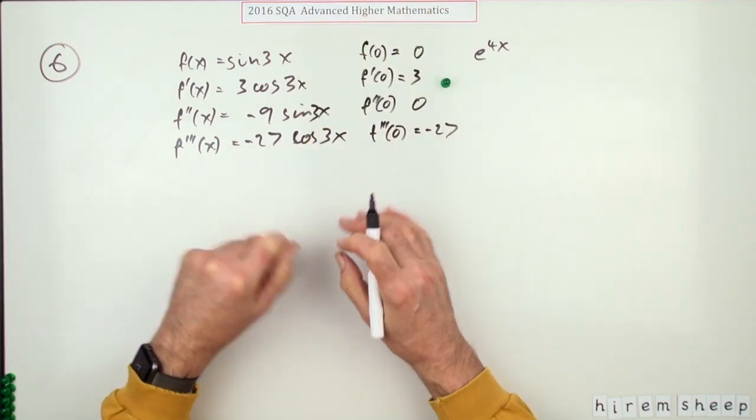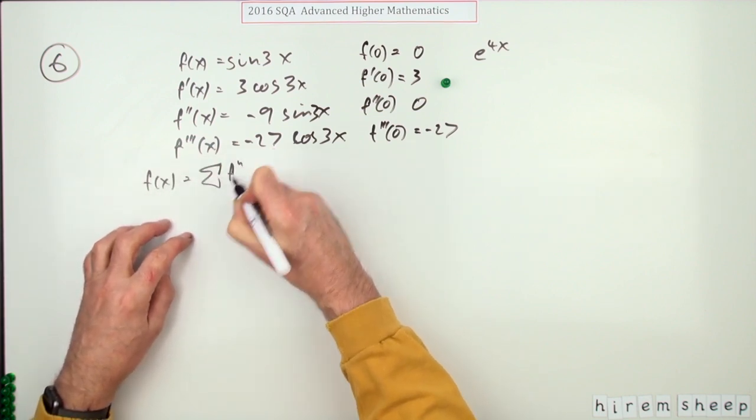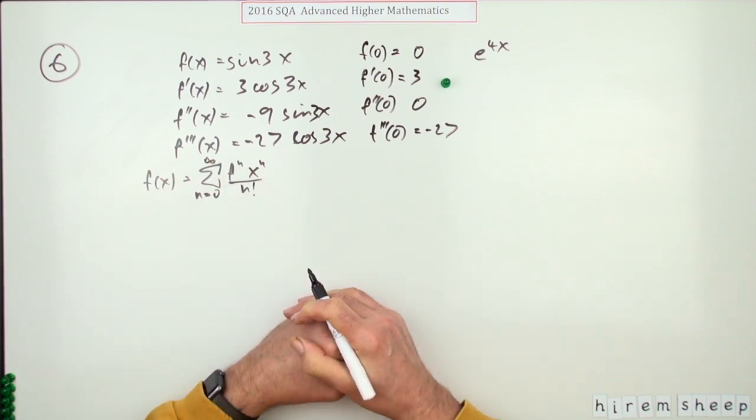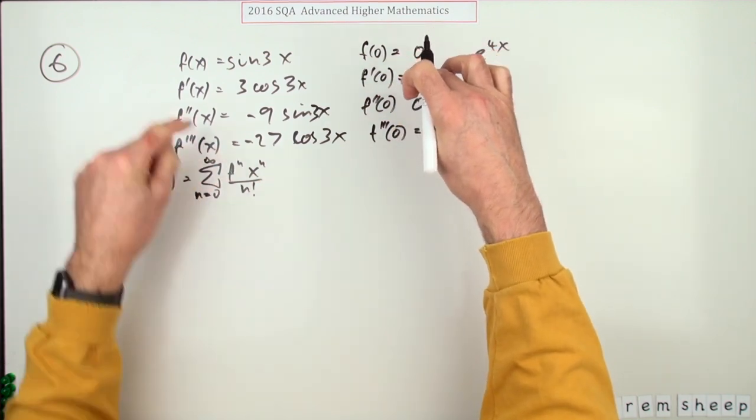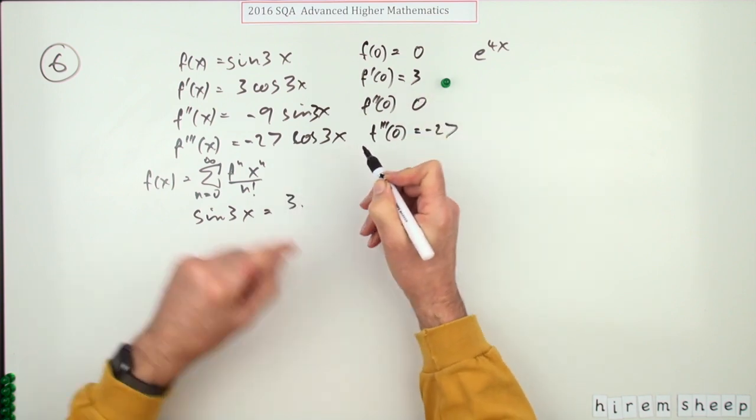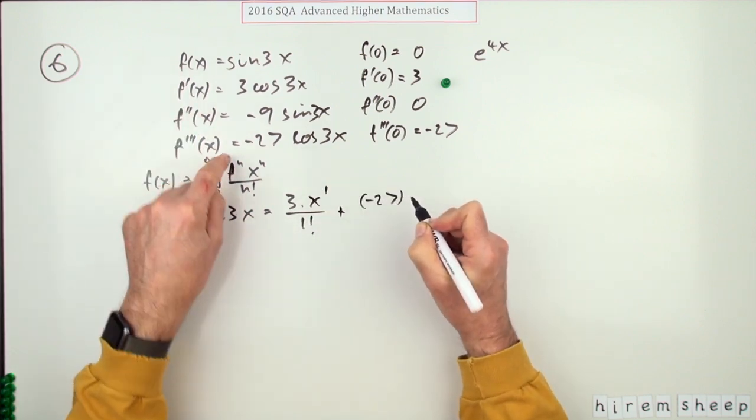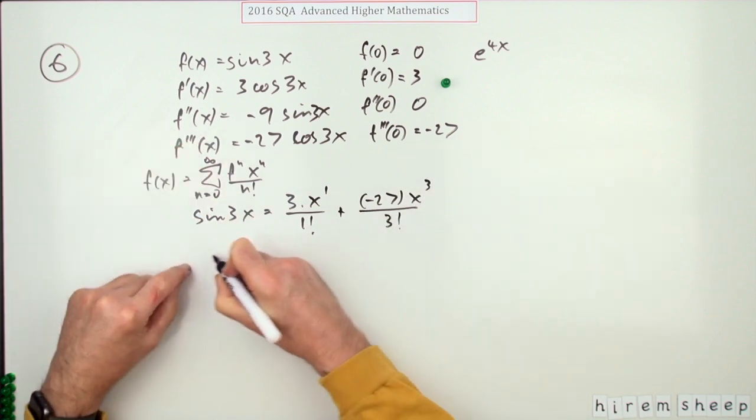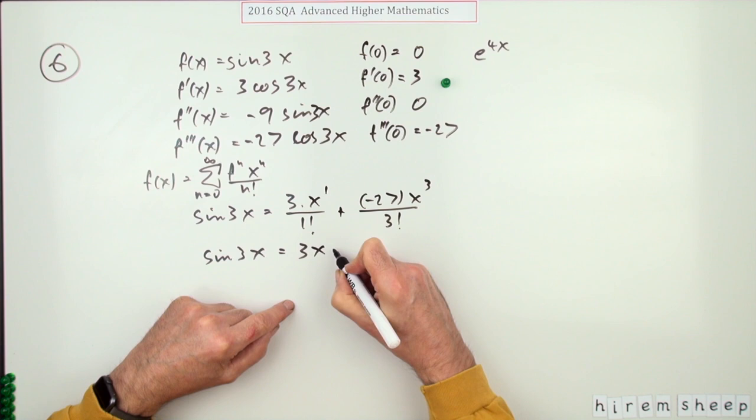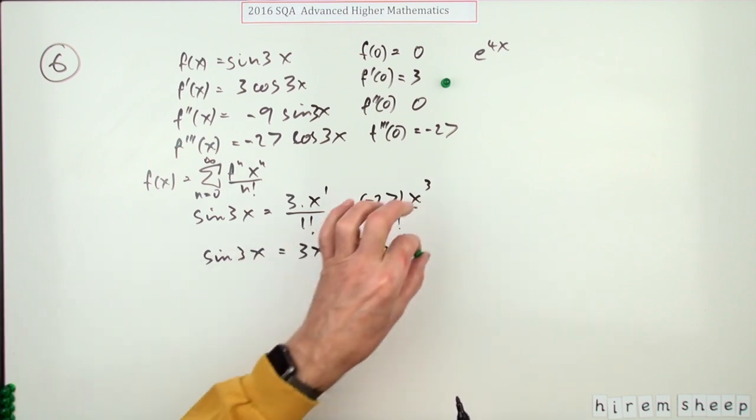Now you get a mark. Now you've got to put it all together. F of X would be sigma, N equals 0 to infinity, F N of 0, X to the N over N factorial. So which Ns have we got? We've only got these two, 1 and 3. So that means sine 3X will be 3, being the first one, X to the 1 over 1 factorial, plus negative 27, that's the third one, X to the 3 over 3 factorial. So sine 3X is going to be 3X minus, and as before, 9 upon 2X cubed. Now you've got a mark.